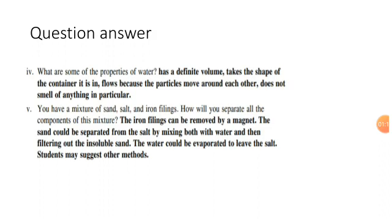As you know students, we are going to separate the iron filings by using the magnetic method of separation. The answer is: the iron filings can be removed by a magnet. The sand could be separated from the salt by mixing both with water and then filtering out the insoluble sand. The water could be evaporated to leave the salt.